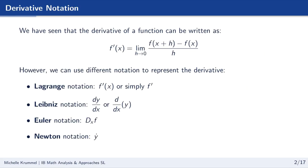We saw in the last lesson that we can define the derivative of a function as f prime of x equals the limit as h approaches 0 of f of x plus h minus f of x over h. So f prime of x is one type of notation we can use to represent a derivative, but there are other notations as well. Here are some examples of ways that we can do that.